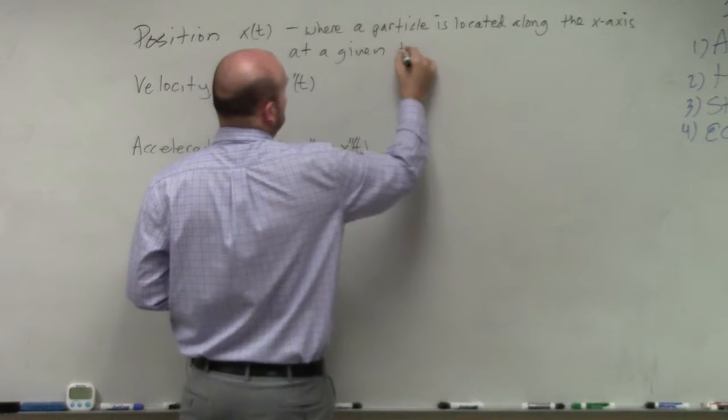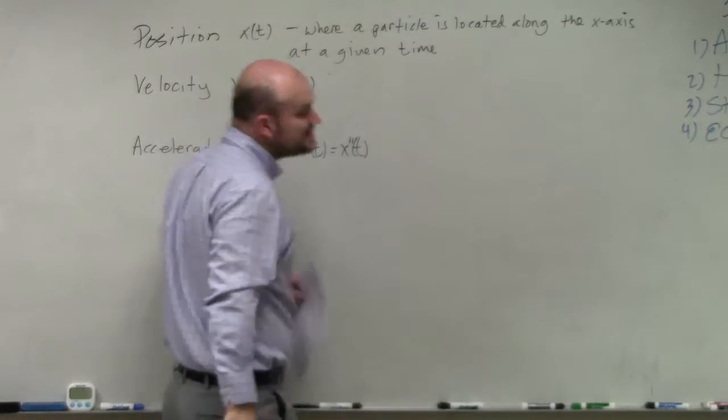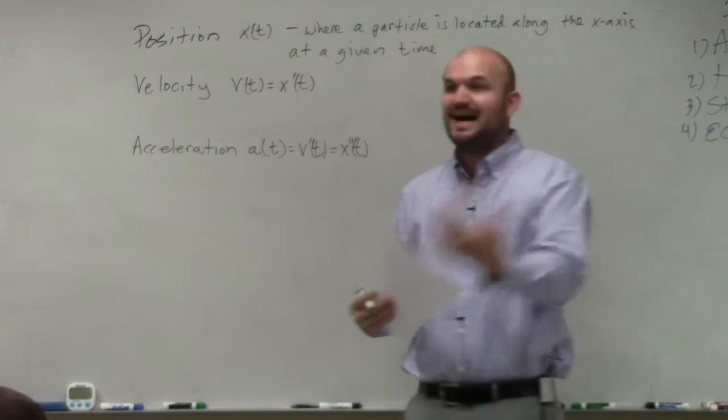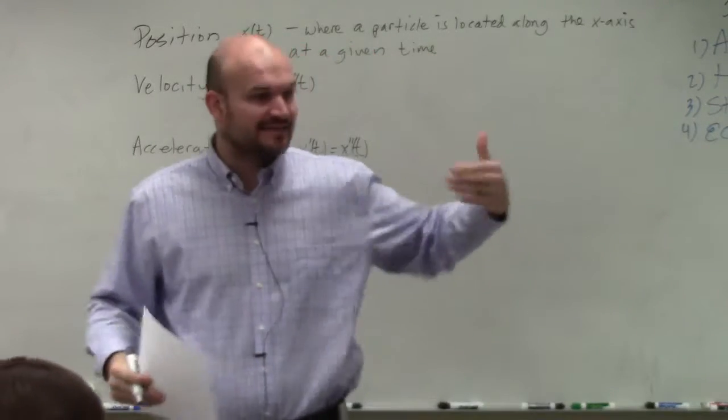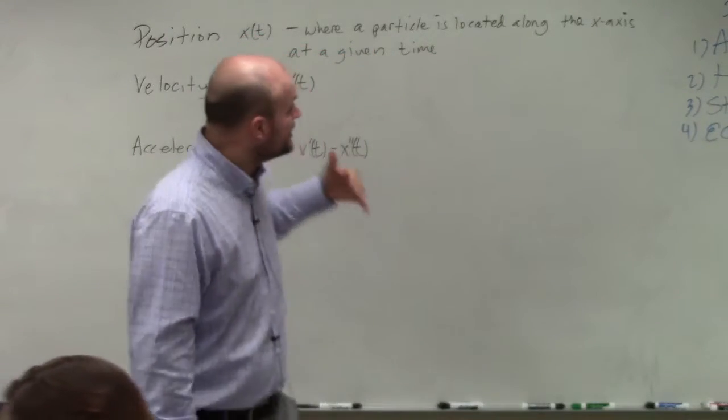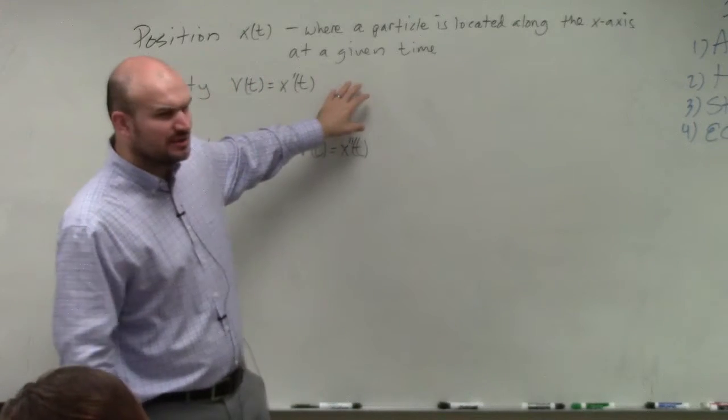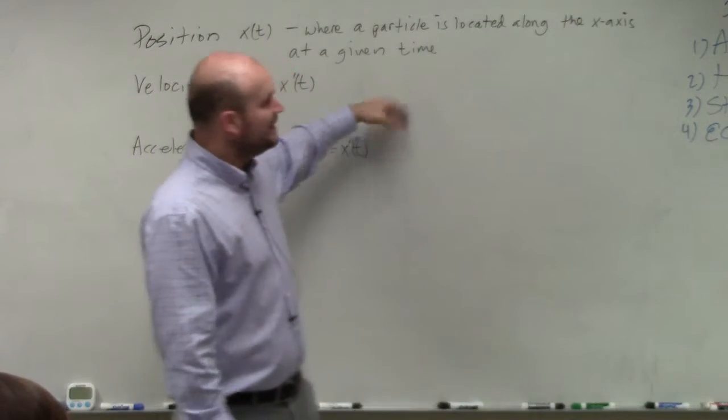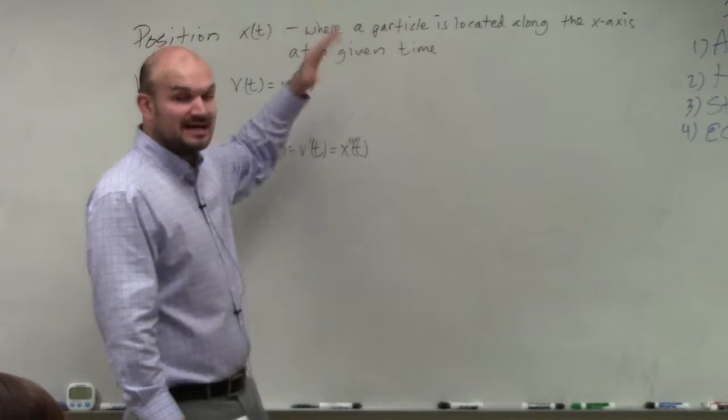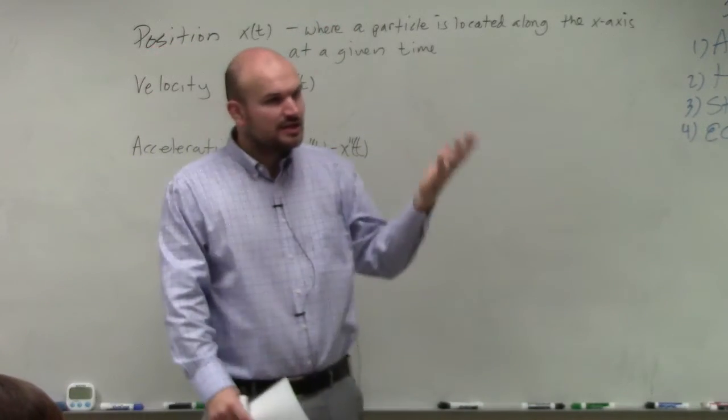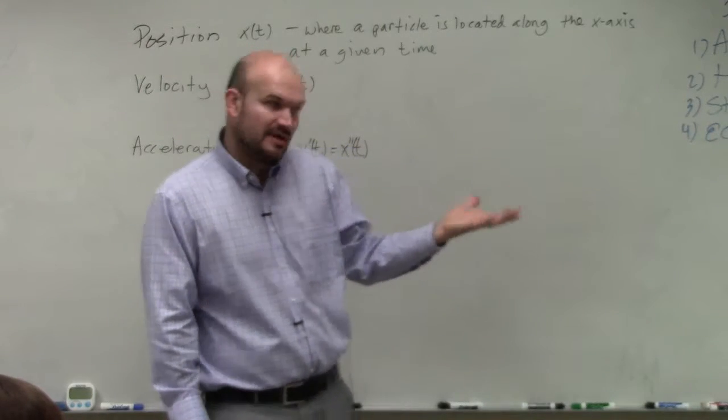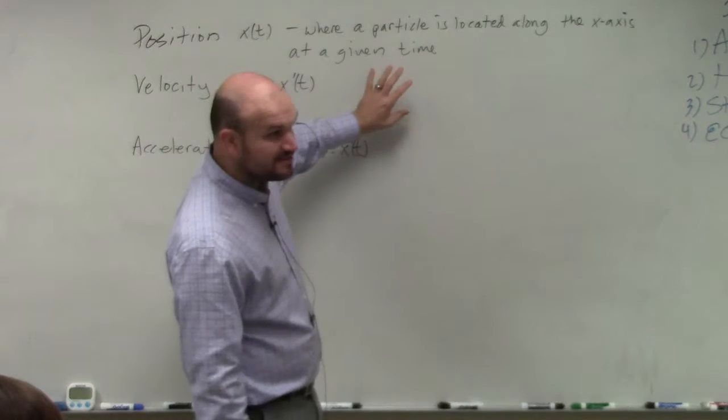Because if you guys remember, I think one of the confusing portions when we're dealing with position is position is talking about where something lies along the x-axis at a given time. And one thing that we'll be looking at, again, more loosely into next class period, but we'll take a look at a little bit this class period, is looking at different velocity or position graphs and so forth. Just remember, position is where something is located along the x-axis. That is something you guys have been very familiar with as far as position graphs.